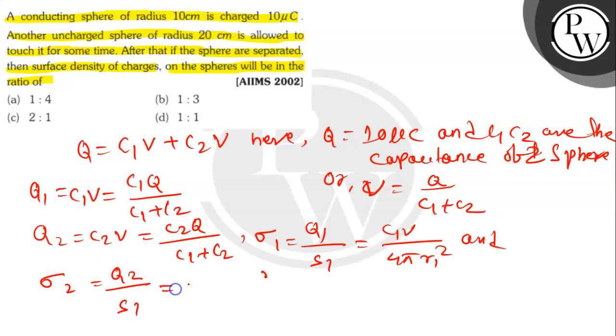The surface charge density σ1 = Q1/(4πR1²) and σ2 = Q2/(4πR2²).